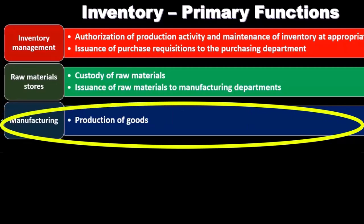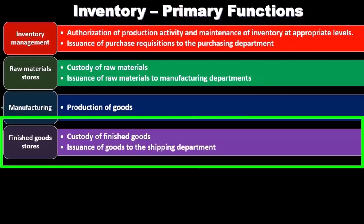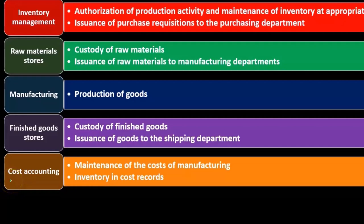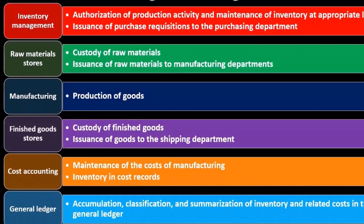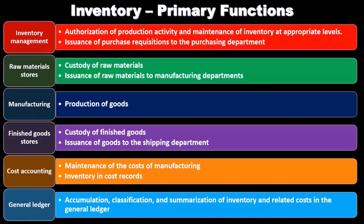Then we have manufacturing — the primary function of manufacturing is the production of goods. Finished goods storage involves the custody of finished goods and issuance of goods to the shipping department. Cost accounting is the maintenance of the cost of manufacturing, inventory, and cost records. The general ledger handles the accumulation, classification, and summarization of inventory and related costs in the general ledger.